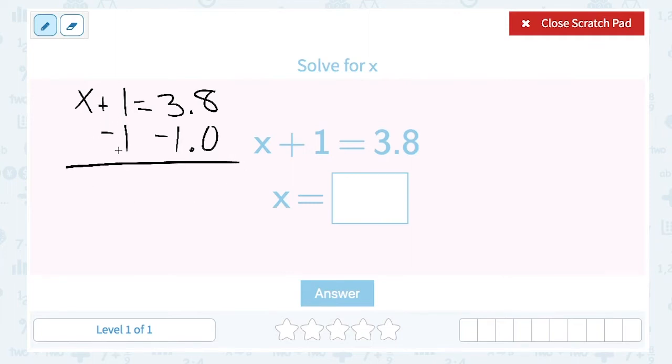x plus 1 minus 1 is simply x. Bring down that equal sign. 8 minus 0 is 8, bring down our decimal. 3 minus 1 is 2. So my answer is 2.8.